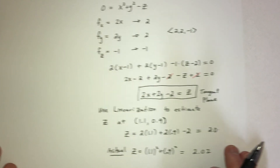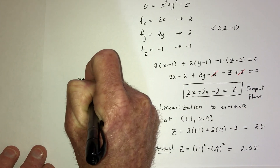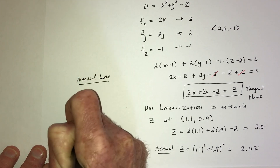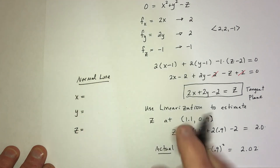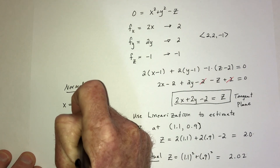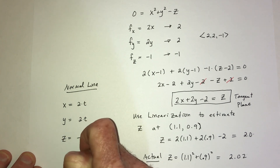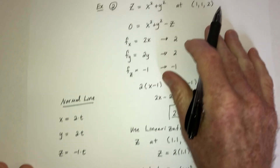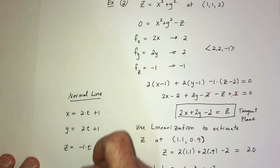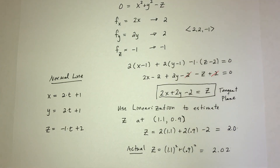The last part for example 2 is the normal line in parametric form: x = 2t + 1, y = 2t + 1, z = −t + 2. Take the numbers from the gradient vector (2, 2, −1) in front of t, and add the point coordinates (1, 1, 2).